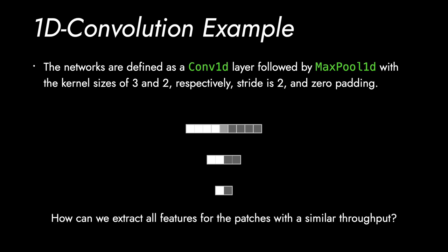Then the question is that, how can we extract all features for the patches with a similar drawback?